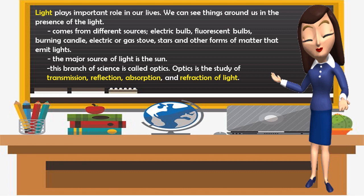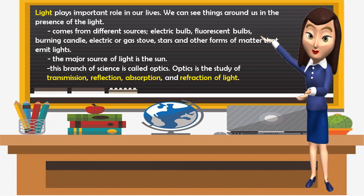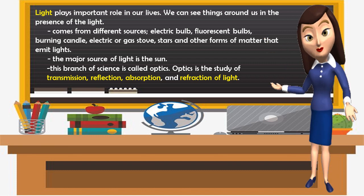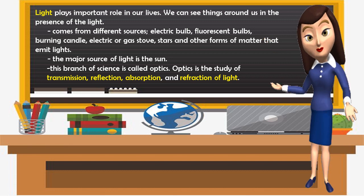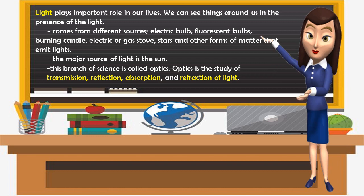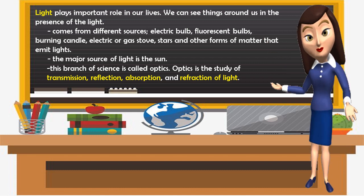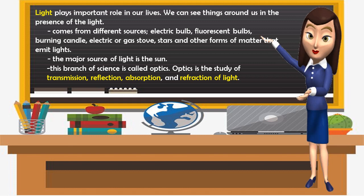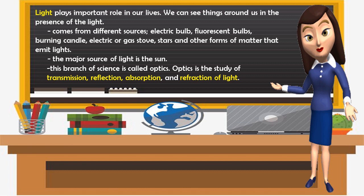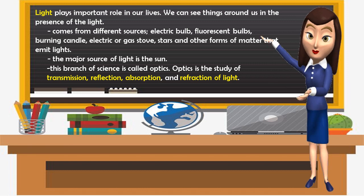Light plays an important role in our lives. We can see things around us in the presence of light. Light comes from different sources like electric bulbs, fluorescent bulbs, burning candles, electric or gas tubes, stars, and other forms of matter that emit light. The major source of light is the sun. This branch of science is called optics — the study of transmission, reflection, absorption, and refraction of light.